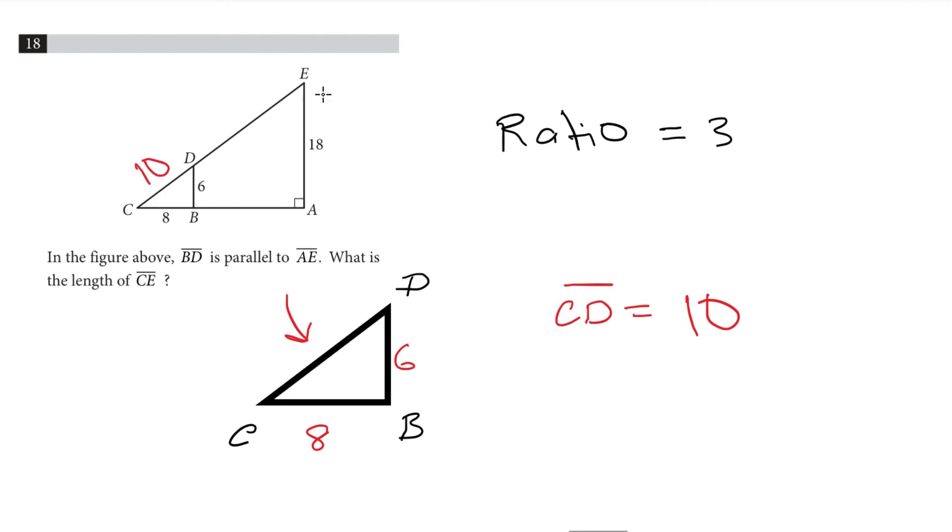Now we know that there is a ratio, there is a proportion. And it is that CE must be three times larger than CD. So CE is equal to 3 multiplied by 10. And that gives us 30. So our answer is CE is equal to 30 units.